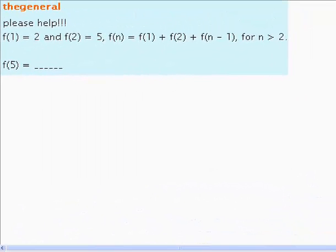Today's question was posed by The General. The question reads: f(1) = 2 and f(2) = 5. The general equation is f(n) = f(1) + f(2) + f(n-1), for any value n that is greater than 2.